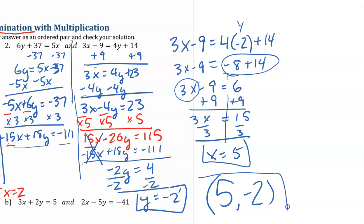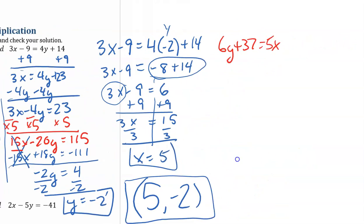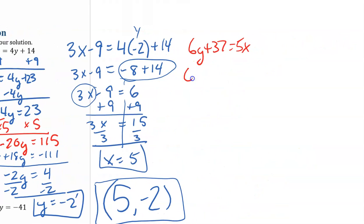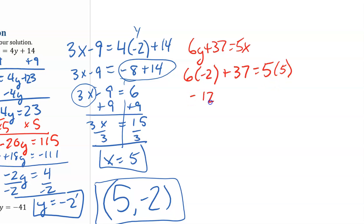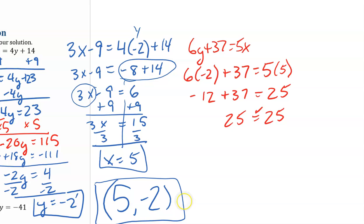Now I'm going to go back and check my answer using that first equation. My first equation: 6y plus 37 equals 5x. Y is negative 2, so 6 times negative 2 plus 37 should equal 5 times x, which is 5. Negative 12 plus 37 equals 25. 25 equals 25. Check — that is our solution.